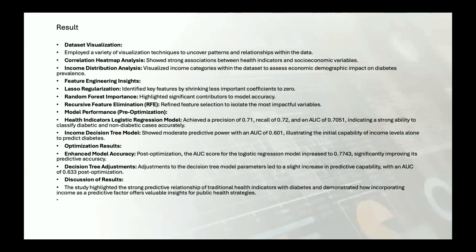For the results of our research, we began by using various visualization techniques to understand the relationships within our data. Correlation heatmaps and income distribution charts were particularly insightful, helping us identify key patterns between health indicators and socioeconomic status. Through our feature engineering efforts, we were able to pinpoint which variables had the most impact on diabetes risk. Our models initially showed good predictive ability, and we refined them further through optimization techniques like grid search, which improved accuracy and predictive power significantly.